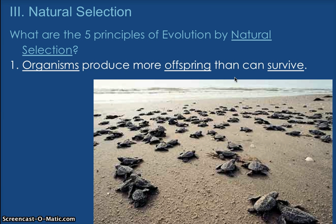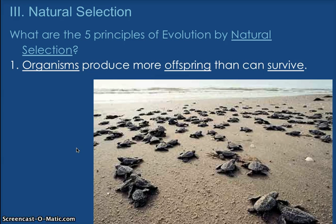The first one is: organisms produce more offspring than can survive. The seventh grader way of saying that is organisms that die a lot have more babies. That is the reason humans only have one or two — we don't have that issue; we don't have a lot of death rate or predators. Like the turtles in the picture here, they have lots and lots of babies. Same thing with Nemo — they had thousands of eggs because they have many predators, so if they want their species to survive, they need to have many children, otherwise that species would die off.